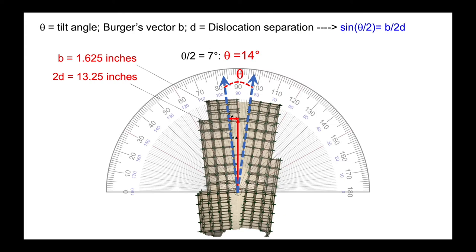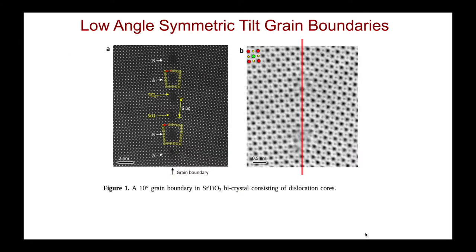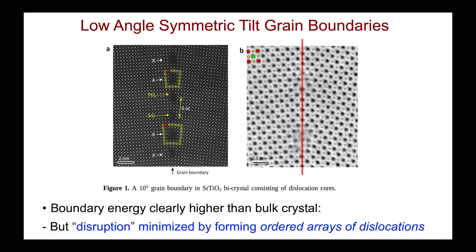There are many experimental examples of materials showing low-angle grain boundaries. Here is an experimental image of a 10-degree grain boundary in strontium titanate: we see the two grains with their perfect structures on either side, and at the boundary there are periodic darker regions corresponding to dislocation cores. In this atomistic picture the Burgers vector of that dislocation has been mapped out. At lower-angle boundaries, registry is maintained by forming these periodic dislocation cores to minimize energetic disruption, though boundary energy is still higher than the bulk crystal.